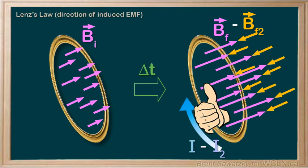So, that's Lenz's Law. An induced electric current flows in a direction such that the current opposes the change that induced it.